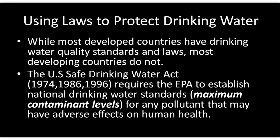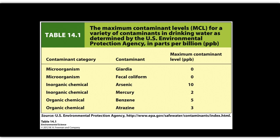Something to look at is the maximum contamination limits — the MCLs — for contaminants. For microorganisms, measurement is typically in colonies per 100 milliliters. Listed here are fecal coliform — a major one, as an indicator organism for other harmful pathogens in a water supply — and Giardia. Then you have arsenic at 10 PPB, which is a really, really low number.